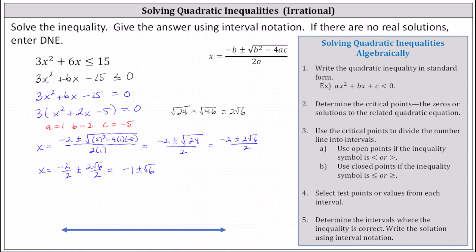Now remember, there are two values. One is negative one minus square root of six, and the other is negative one plus square root of six. Negative one minus square root of six is less, so we make a closed point on the left labeled negative one minus square root of six, and on the right, negative one plus square root of six.